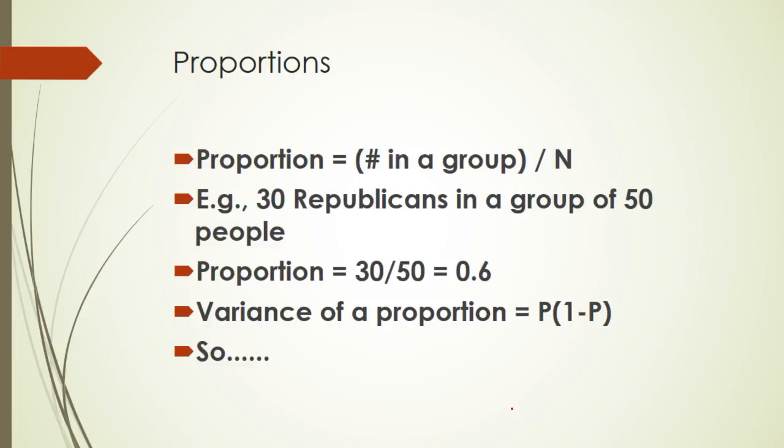Now, in an election it's always a percent, like 40% plus or minus. The answer to that is we're using something called a proportion, which is the number in a group divided by the n. We have 30 Republicans in a group of 50 people. The proportion would be 30 divided by 50, which is 0.6. It turns out that the variances of proportions are really easy to figure out. To find the variance of a proportion we take p times 1 minus p and that's the variance. If we take the square root, the standard deviation s would equal the square root of that. Simple.